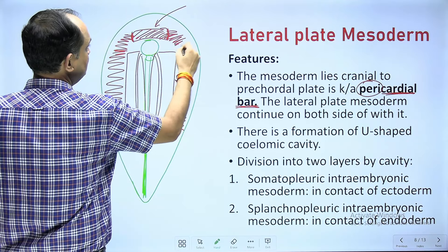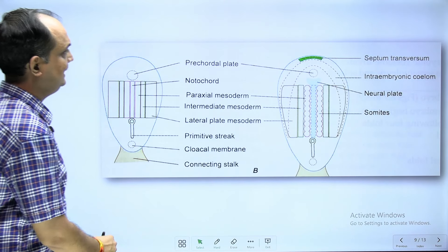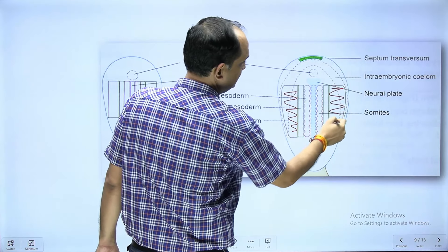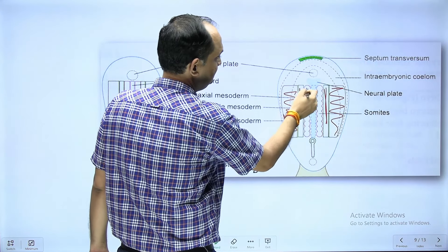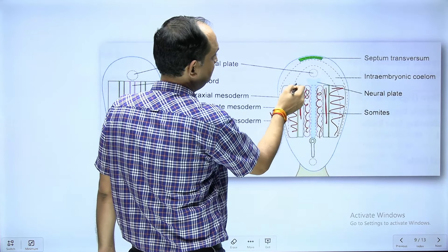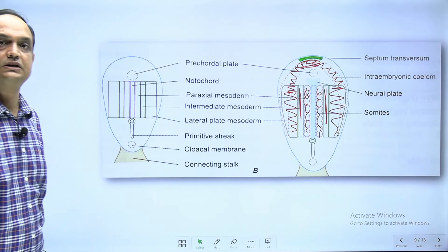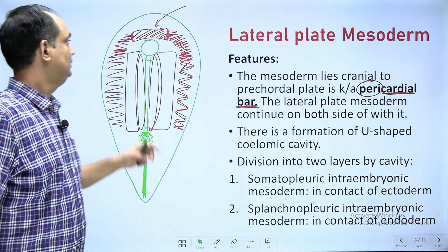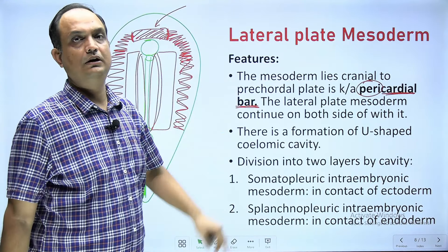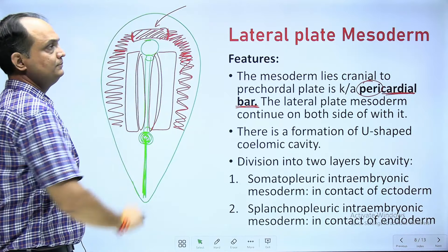Looking at the diagram, the lateral plate mesoderm, intermediate mesoderm, and para axial mesoderm are clearly visible. The lateral plate mesoderm is continuous with the pericardial bar, which is present just cranial to the pre-chordal plate. So the mesoderm cranial to the pre-chordal plate is known as the pericardial bar, and the lateral plate mesoderm continues with the sides of this bar.